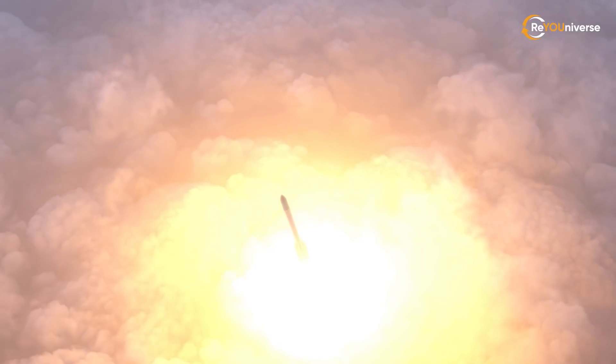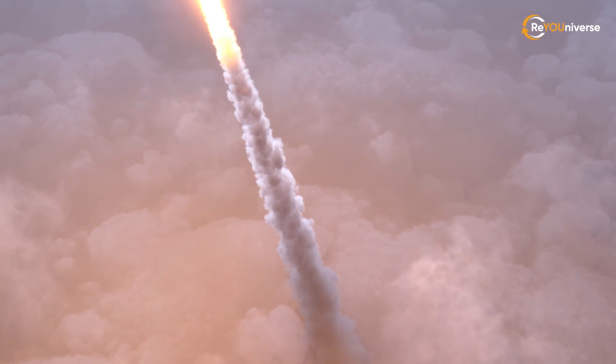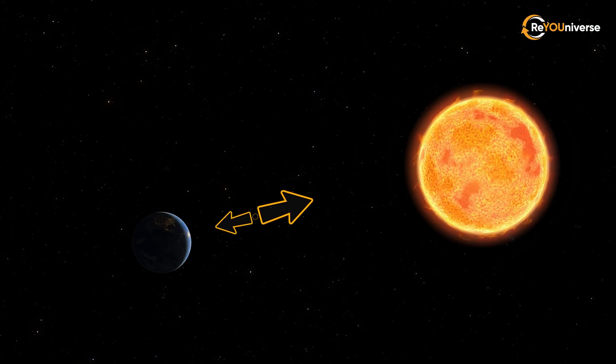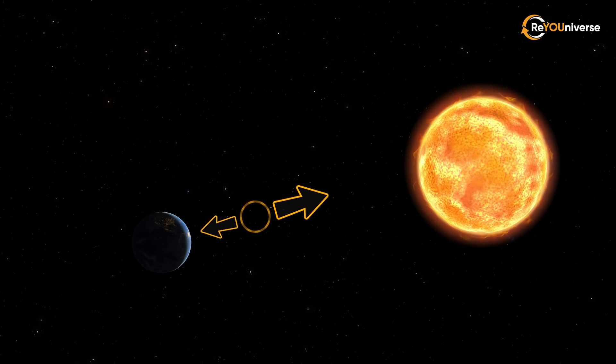After the launch, the device will fly into a halo orbit at the L2 Lagrange point of the Sun-Earth system. The Lagrange point is a special place where the gravity of two neighboring bodies balance each other out.